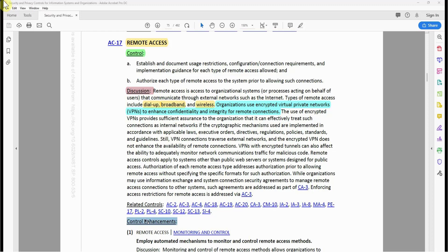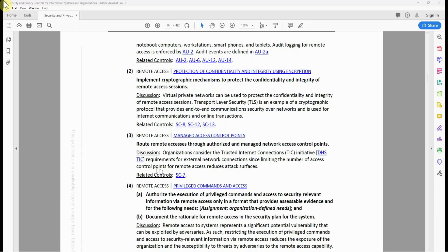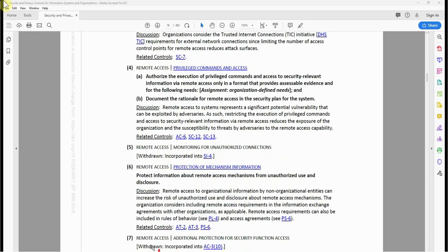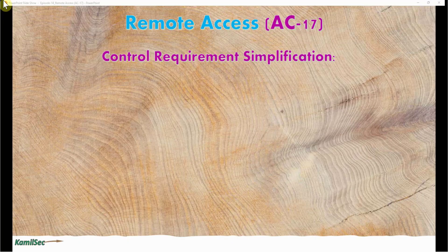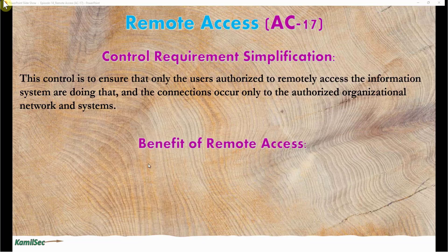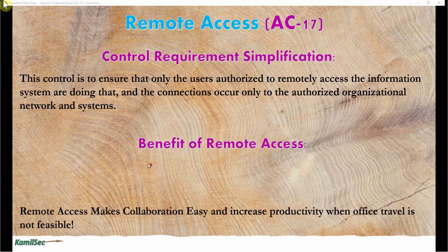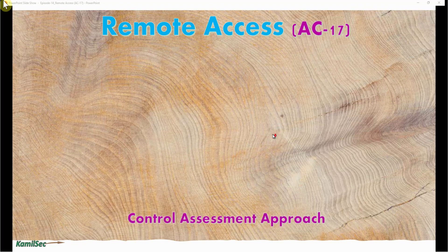AC-17 has 10 control enhancements. The control requirement simplification: this control ensures that only users authorized to remotely access the information system are doing so, and that connections occur only to authorized organizational networks and systems. Some benefits of remote access include making collaboration easy and increasing productivity when office travel is not feasible.